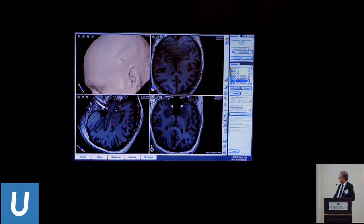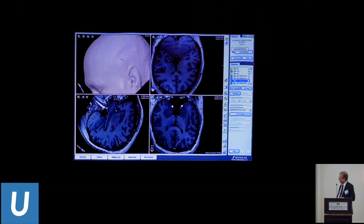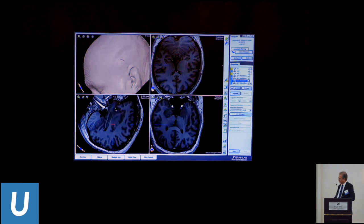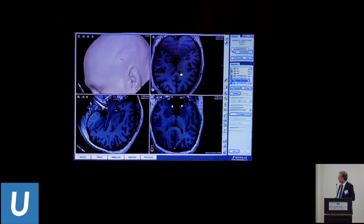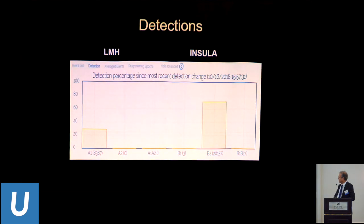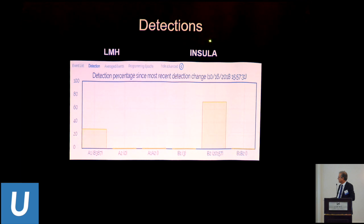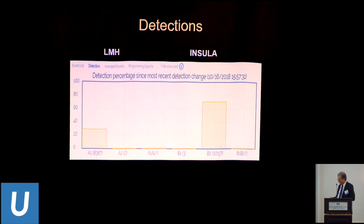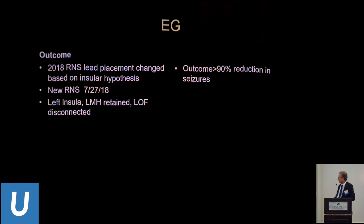Despite wide sampling, the patient continued to have seizures. In retrospect, we felt we might have missed an insular onset, which can masquerade by giving both frontal and temporal electrophysiology. So we placed an additional insular electrode—you can see the tip of the electrode in the RNS right here in the insula—and it actually achieved better results. The detection percentage went up because we had much higher detection in the insula compared to the left middle hippocampus, showing that most of the activity was actually in the insula. This illustrates both that life is not easy and that these networks can be very tricky.